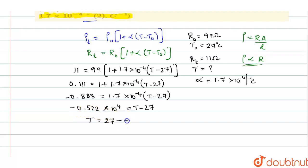That gives you 5220, and T comes out to be, you will have to do 27 minus 5220, which is minus 5193 degree Celsius. So, this is the temperature at which the resistance is found to be 11 ohms.